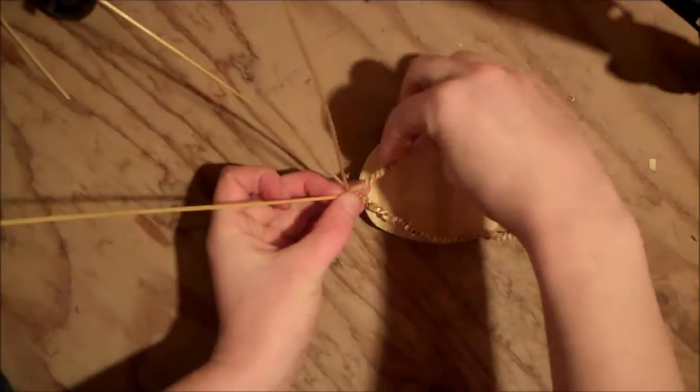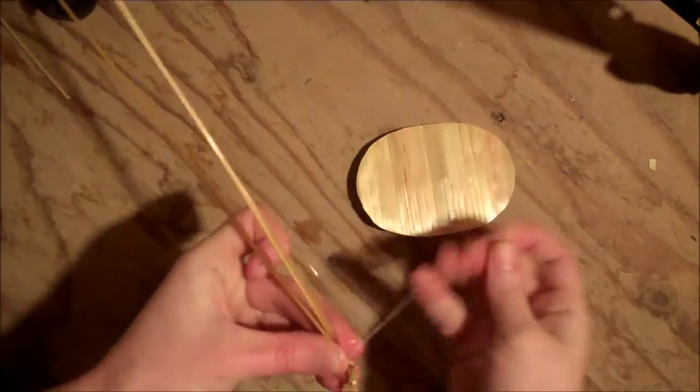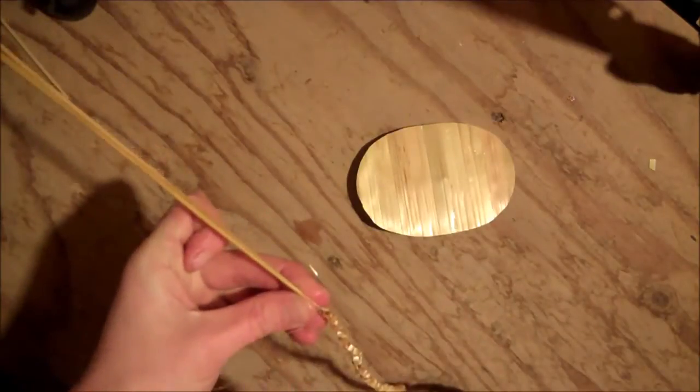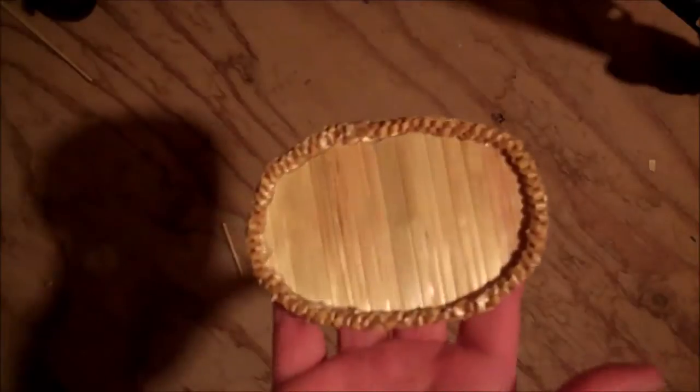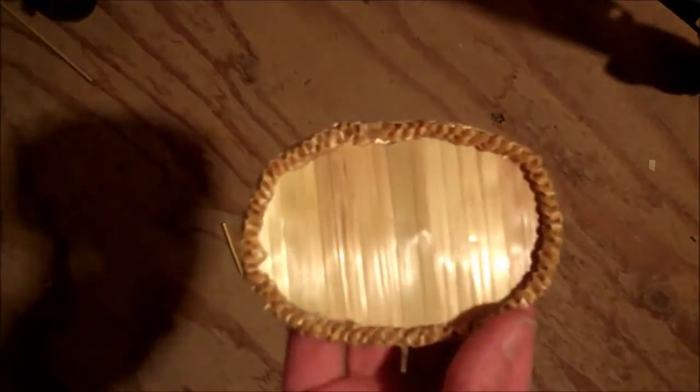And then when your weaving is long enough to fit around the oval, just take a piece of white thread and tie off the straws and then cut off the excess. And then you just hot glue that weaving around the edges of the brooch.